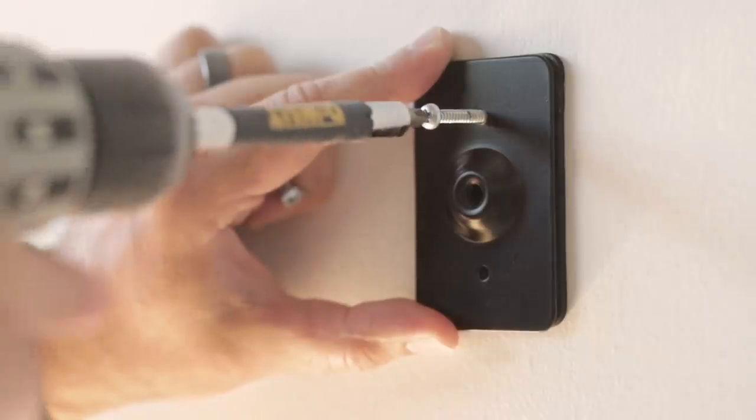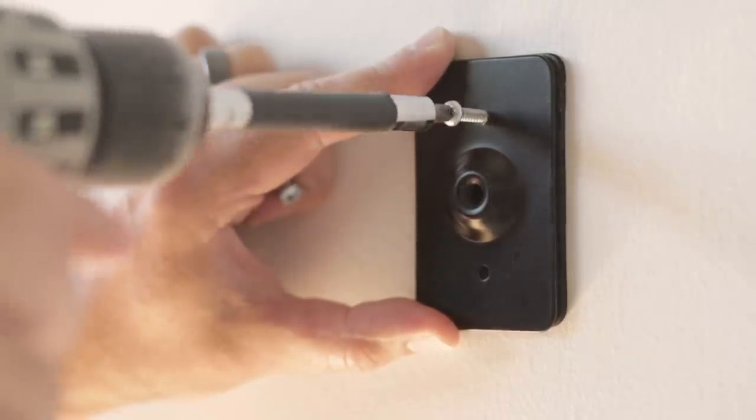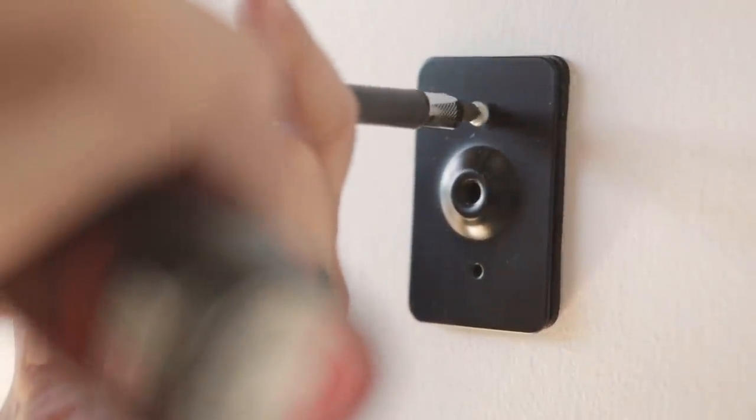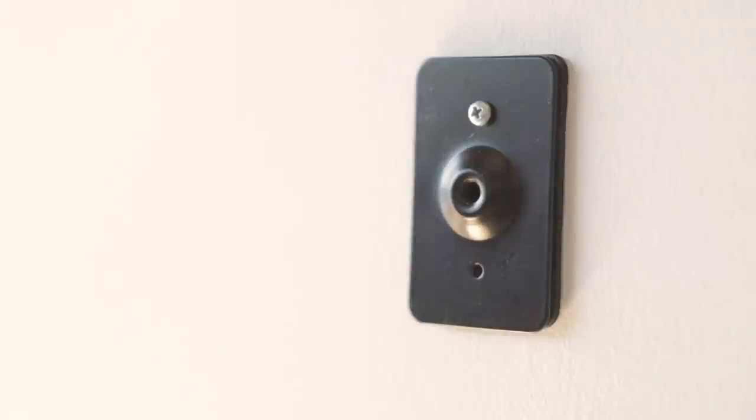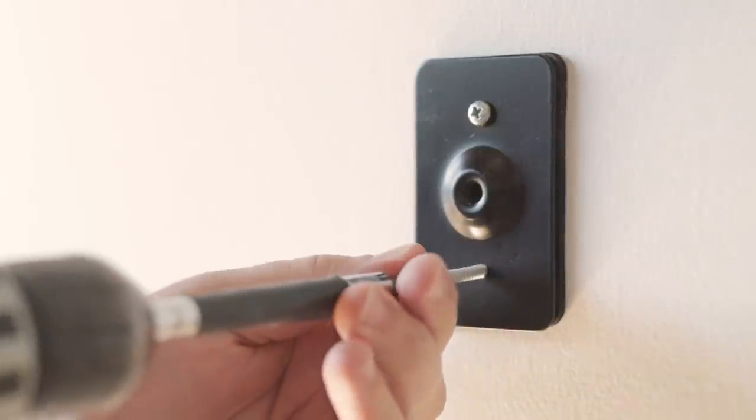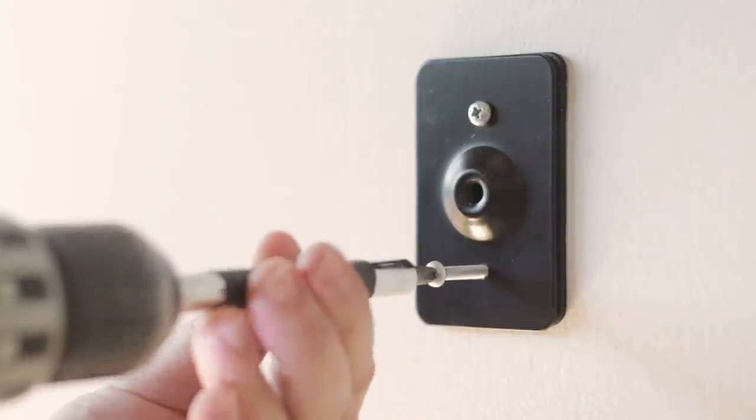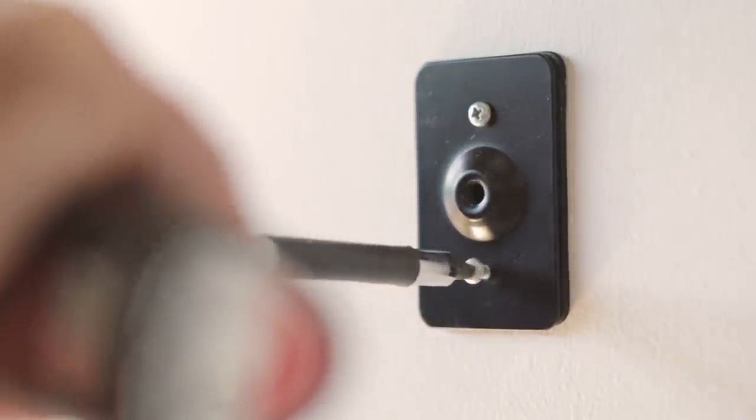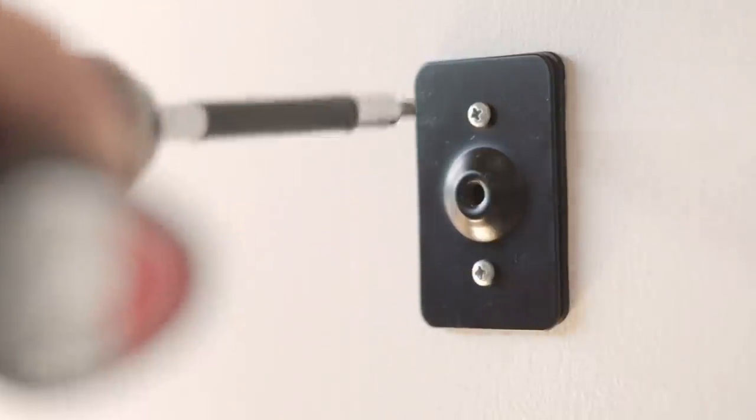Next step, you'll put the steel mounting plate on the foam pad and screw through that directly into the stud. Note that no anchors are required. This will just use the provided screws directly into the wood stud.